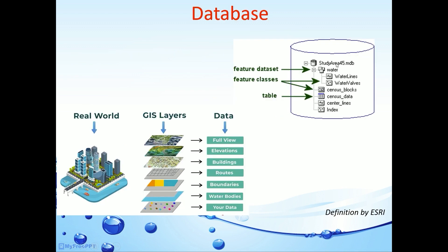Here you can see databases are represented with the cylindrical symbol. Under the database, there are datasets, which mean a collection of feature classes. Under the dataset, there are different types of feature classes. The feature classes contain data related to the real world, which can be represented by different kinds of GIS layers.